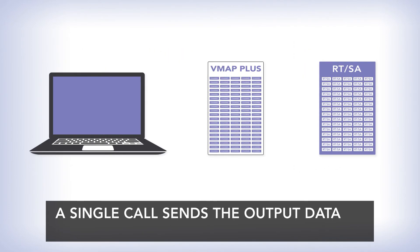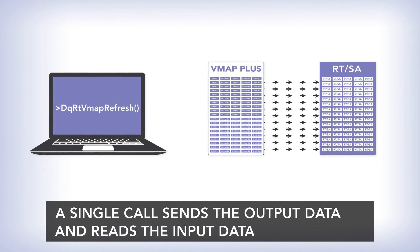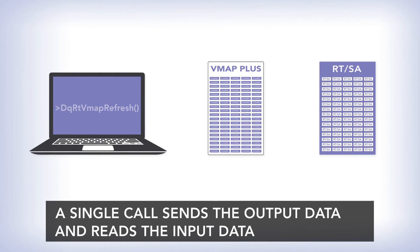A single API call, DqRtVmapRefresh, sends the output data and then reads the input data.